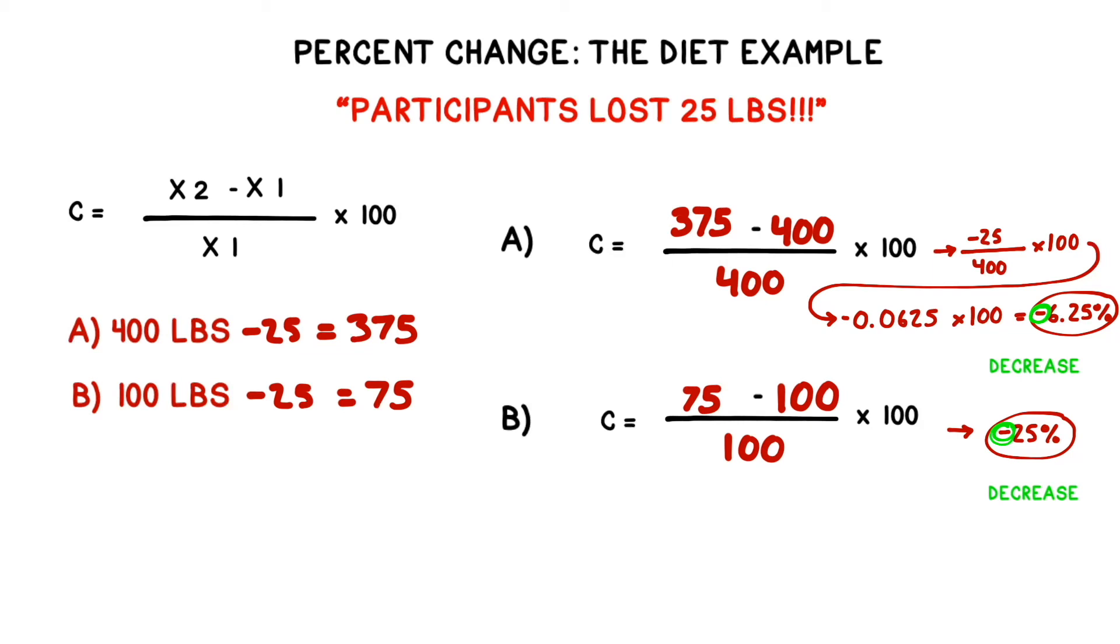Both of our fictional patients lost weight on this diet, but a 25 pound weight loss is not safe for someone who only weighed 100 pounds to begin with. This person would have lost a quarter of their body weight. This is crucial context that was missing from the original headline and that only is revealed by calculating percent change.